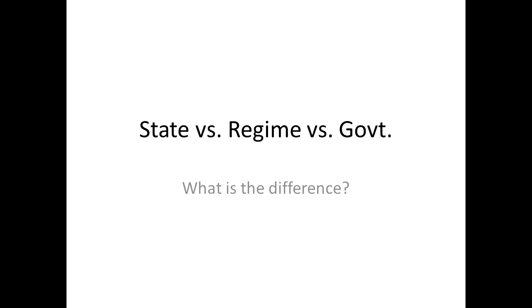One problem that students often have is trying to understand the difference between state, regime, and government. This is particularly a problem for students in the United States because we use these terms very differently than the way people in the rest of the world do, or the way we use them in political science or comparative politics.